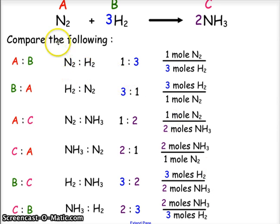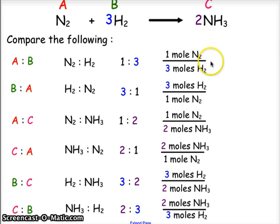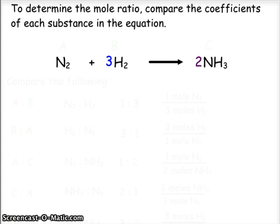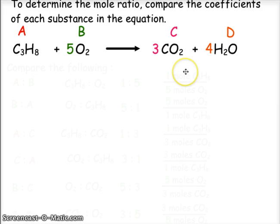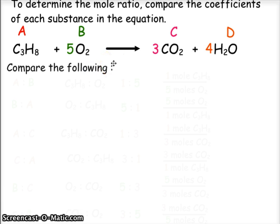In each case, we're comparing a reactant to a product, or a reactant to a reactant, using the coefficient to create the mole ratio or conversion factor. Now get out a piece of paper — I'll give you various comparisons of A to B, A to C, or A to D, and you can write out your conversion factors and see how you did. Let's complete the following.